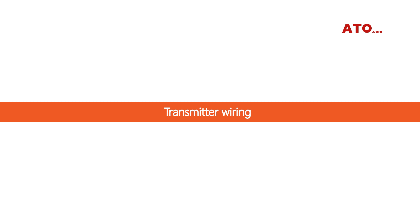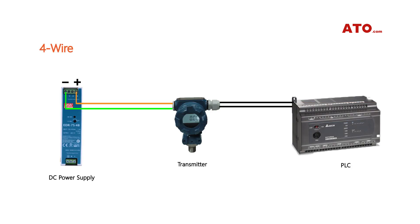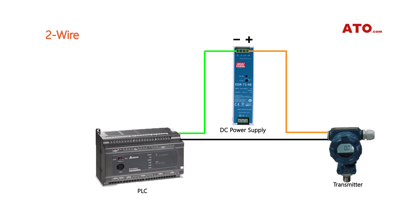Transmitter wiring methods: The first is the 4-wire wiring method, where two power lines are connected to the transmitter and two output lines are connected to a display device or control device. The 2-wire transmitter forms a loop with the controller, and the detected data can be directly transmitted to the controller with a wire.